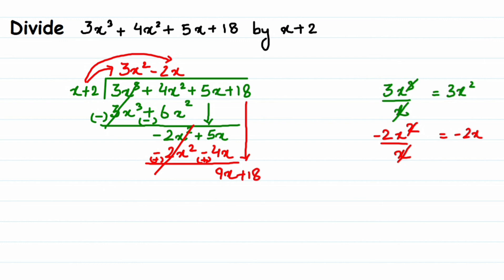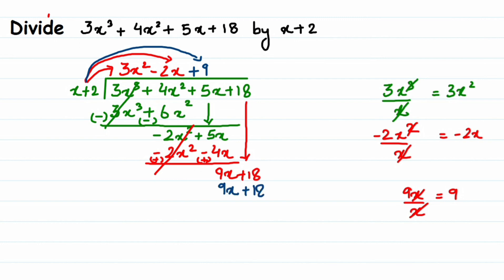The new dividend is 9x plus 18. Divide the first term 9x by the first term of the divisor x — cancel x and x to get 9. Write down plus 9 in the quotient. Multiply x plus 2 by 9: x times 9 is 9x, and 2 times 9 is 18. Change the signs to minus. Cancel — remainder equals zero. So the quotient is 3x squared minus 2x plus 9.